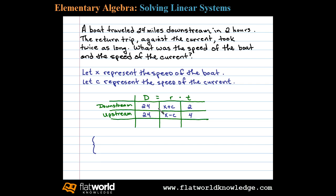We can use the rows to do that. Distance equals rate times time. So the trip downstream, we have the distance is 24 miles. The average rate here was X plus C times the time two hours.